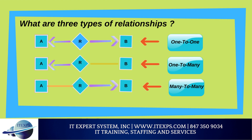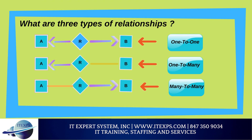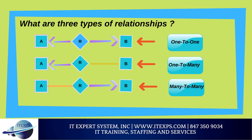What are the three types of relationships? One of the huge advantages of a relational database is that once you have your data held in clearly defined compact tables, you can connect or relate the data held in different tables. There are three types of relationships: one-to-one, one-to-many, and many-to-many. To identify these relationships, you need to examine the data and understand what business rules apply. When analyzing table relationships, you need to look at the relationship from both sides. One table is called the primary or parent table and the other is the related or child table.